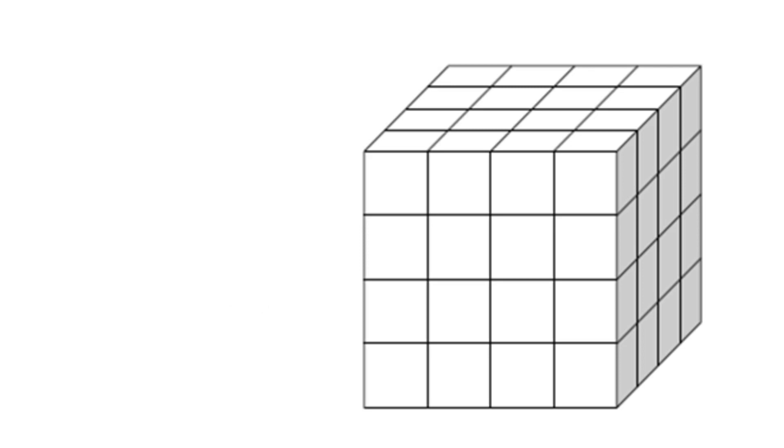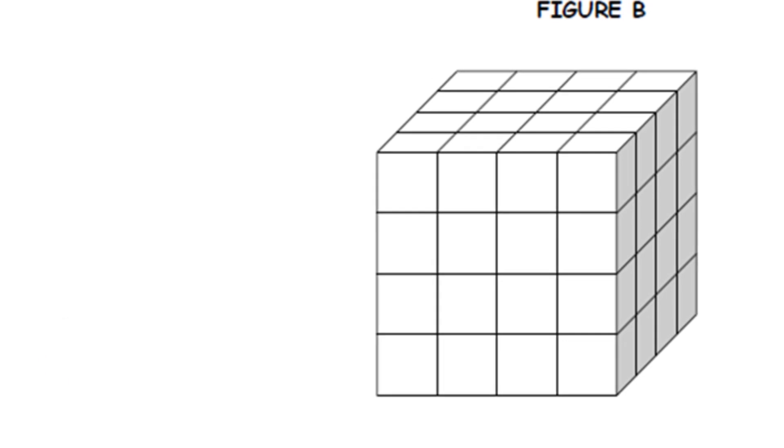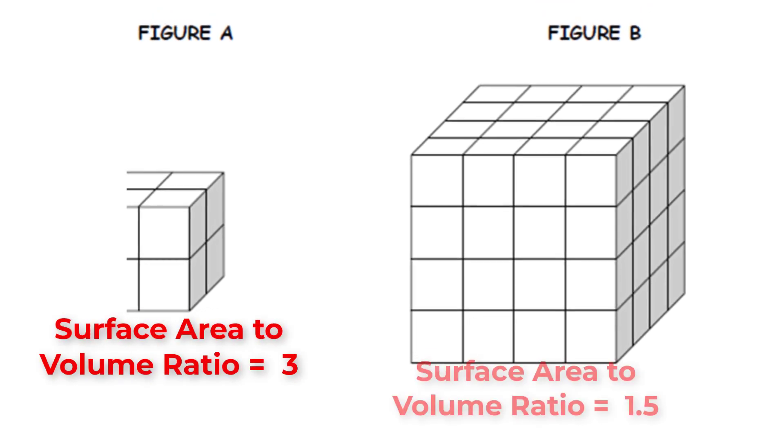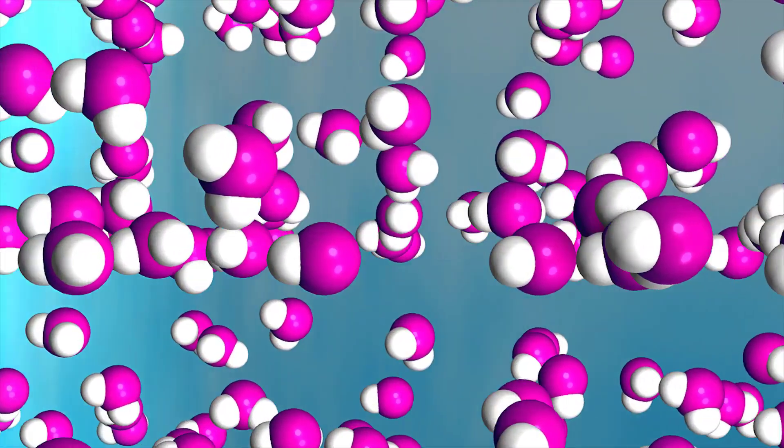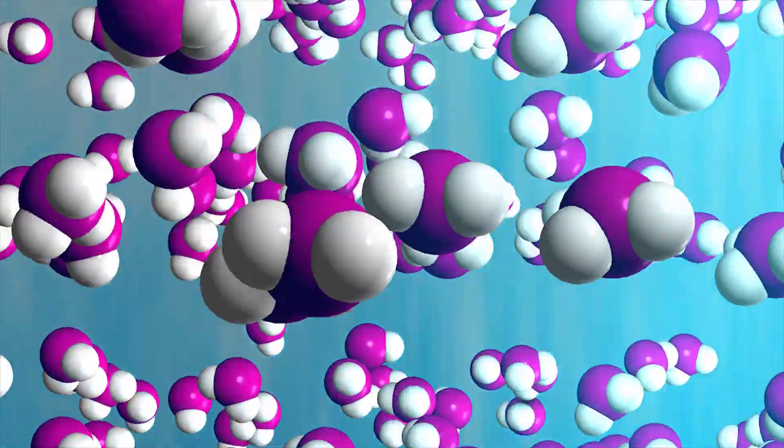When we compare the surface area to volume ratio for Figure A and Figure B, we can see that as the size of an object increases, the surface area to volume ratio decreases. The lower the surface area to volume ratio, the higher the rate of diffusion.